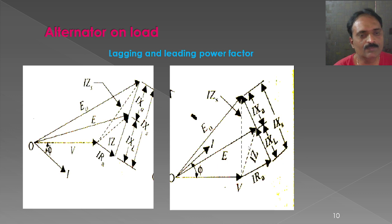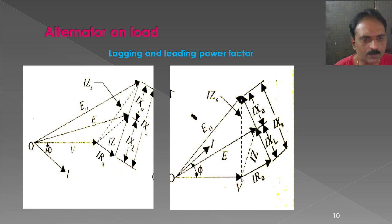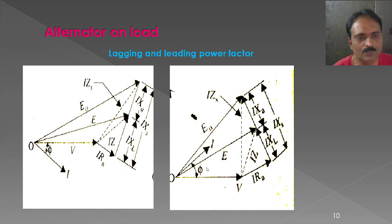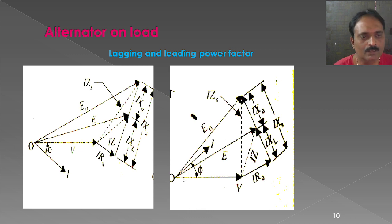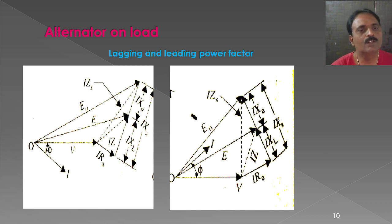For a leading power factor (capacitive load), the current I leads the voltage V by an angle of phi. We draw I×RA parallel to I, and I×XL and I×XA are 90 degrees with respect to I×RA. E and E0 are determined similarly as discussed previously. These are the different phasor diagrams we get whenever the alternator is loaded, and they are very important and easy to understand.